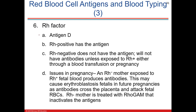The Rh factor, sometimes referred to as antigen D, is what makes blood type positive or negative — like A positive, B positive, AB positive, O positive, or their negative counterparts. They found this antigen in rhesus monkeys. If you're Rh positive, you have the D antigen on your red blood cells. If you're Rh negative, you don't have the antigen.